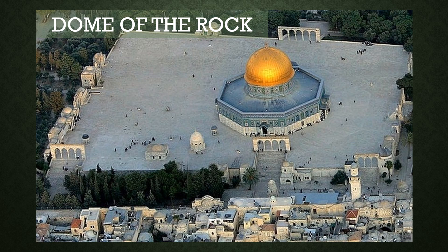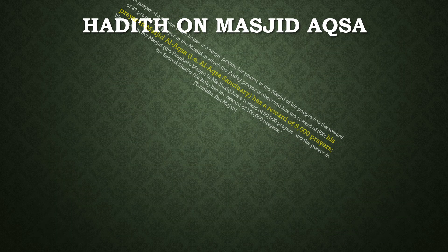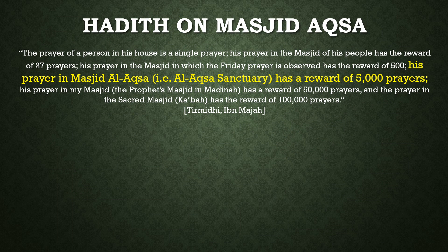The Dome of the Rock is the area which the Jews face in prayer. Masjid al-Aqsa is a significant masjid — within the Hadith we learn that if you read Salah within the Aqsa compound, within Masjid al-Aqsa, you will get the reward of five thousand Salahs that you would read in your own house.